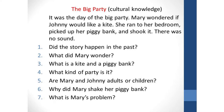Here's an example of how cultural knowledge is needed to understand a text. The excerpt is called 'The Big Party.' It was the day of the big party. Mary wondered if Johnny would like a kite. She ran to her bedroom, picked up her piggy bank and shook it. There was no sound. The first three questions can be answered by searching the text if you know basic English vocabulary like 'kite' and 'piggy bank' and verb tense.